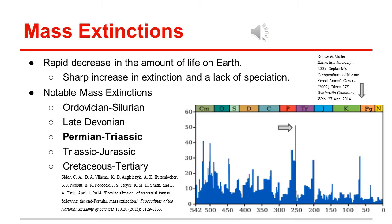The largest extinction, and the one we are focused on, is the Permian-Triassic mass extinction. The figure to the right depicts extinction intensity throughout history. The arrow indicates the location of the Permian-Triassic mass extinction. The X-axis represents extinction intensity, and the Y-axis represents millions of years ago.